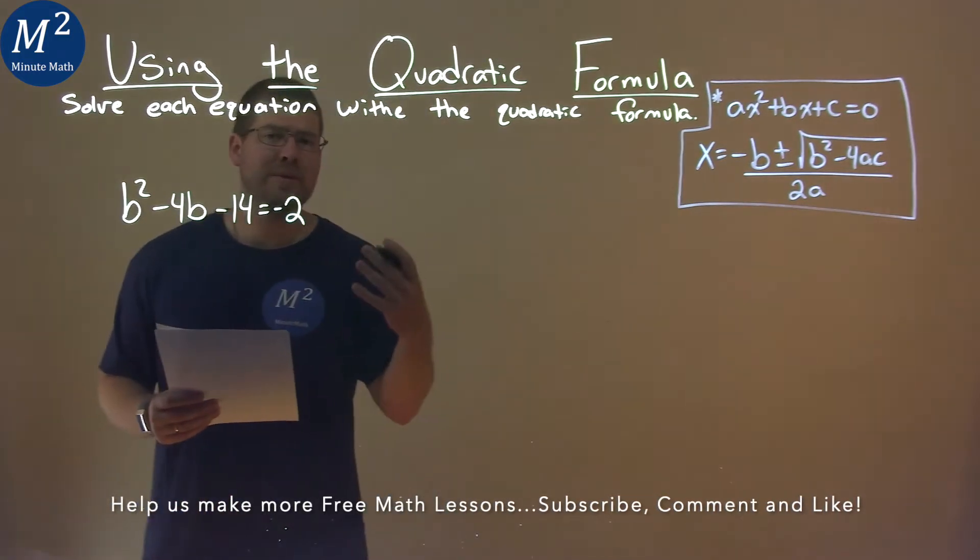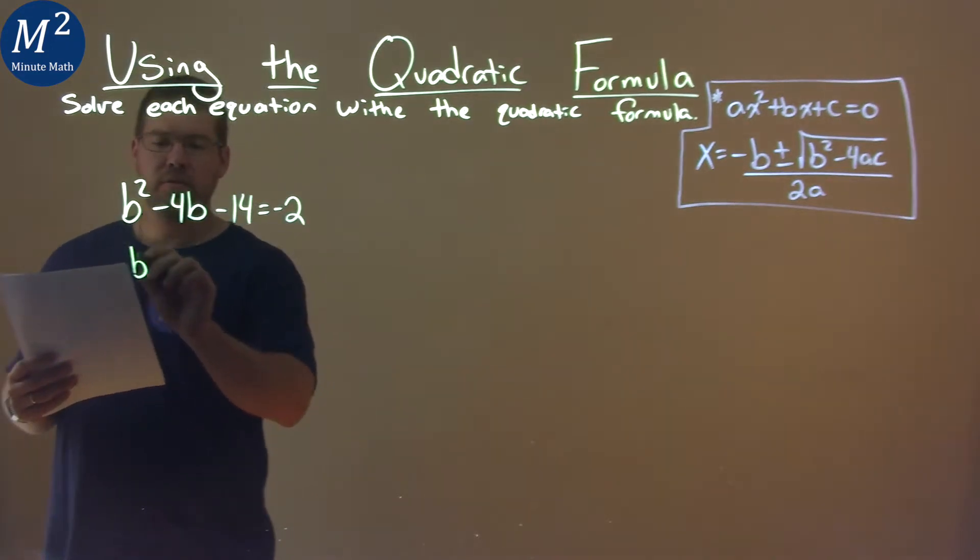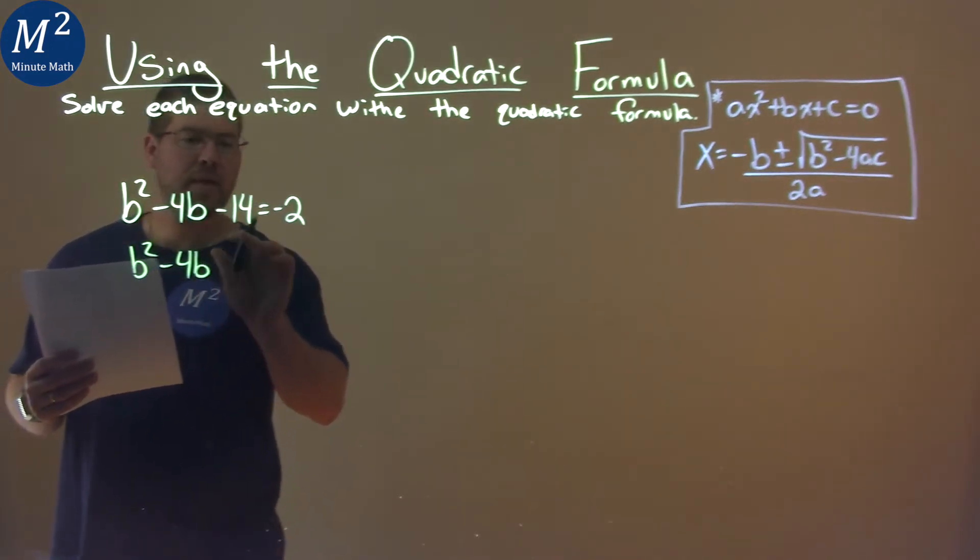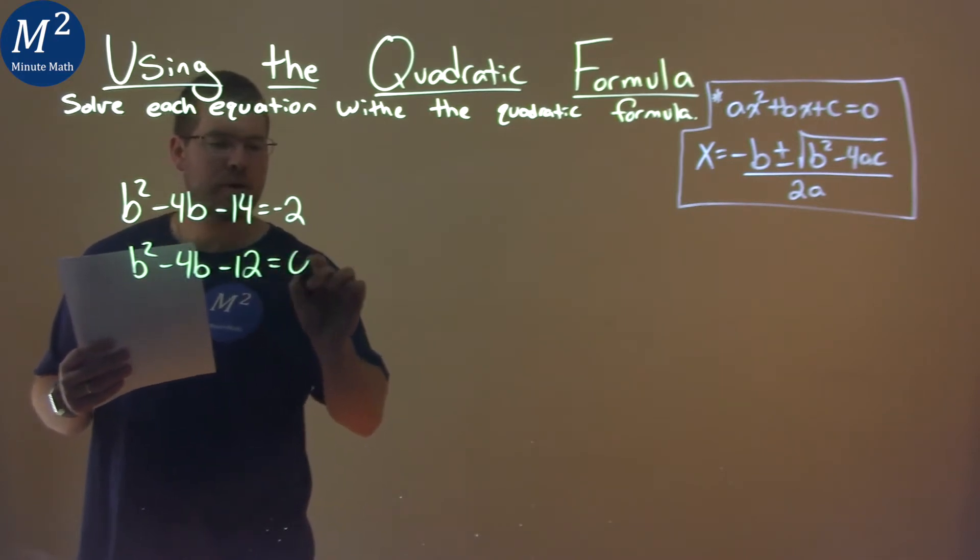First thing I want to do is get everything equal to zero, so I'm going to add 2 to both sides. b squared minus 4b, and then negative 14 plus 2 is negative 12, and that's equal to zero.